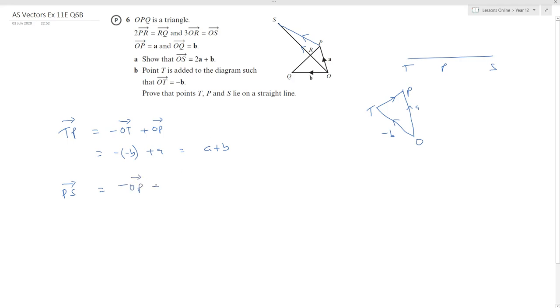Negative OP plus OS. OP is A, so negative OP is minus A, plus OS from the first part of the question is 2A plus B, which gives us 2A minus A, so A plus B.